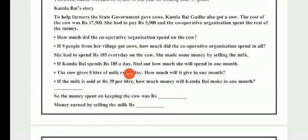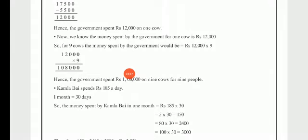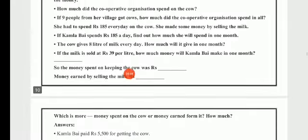Next question: If 9 people from her village got cows, how much did the cooperative organization spend in all? The cooperative organization spends Rs. 12,000 per cow, so for 9 cows: 12,000 multiplied by 9 equals Rs. 1,08,000. The cooperative organization had to pay Rs. 1,08,000 for 9 cows.